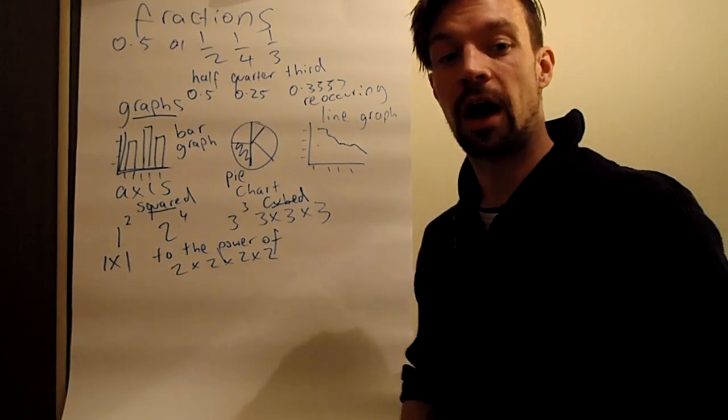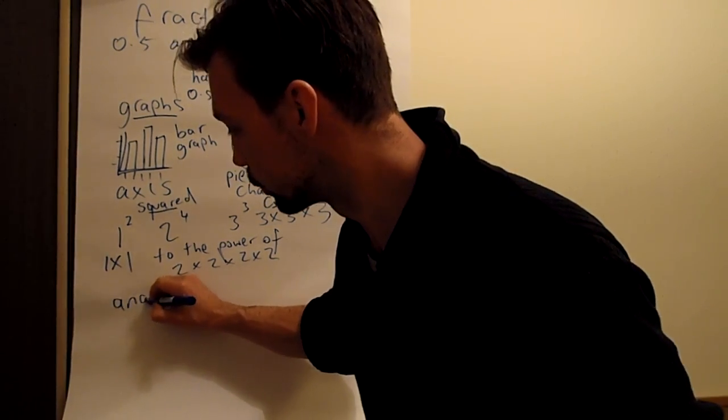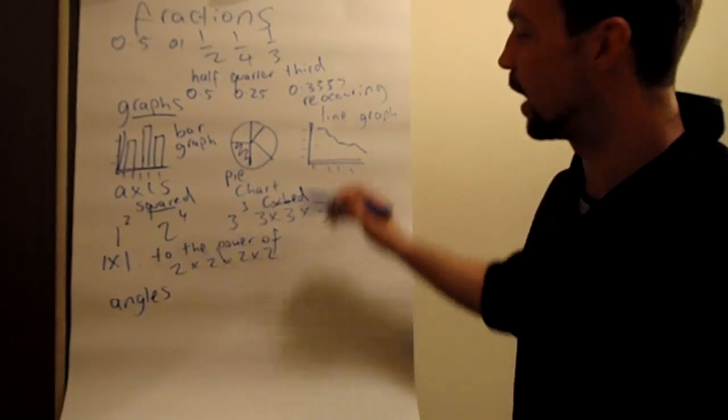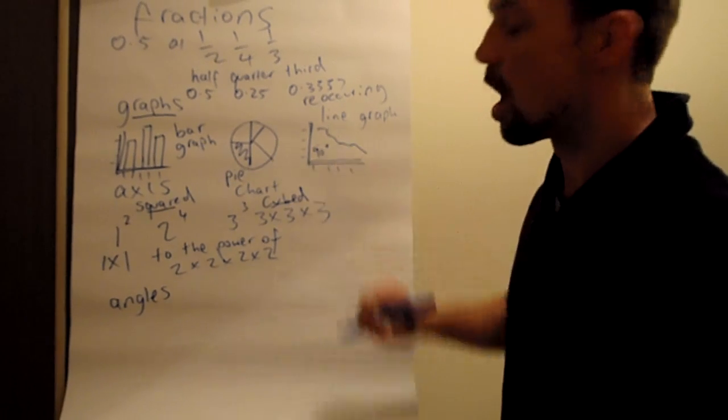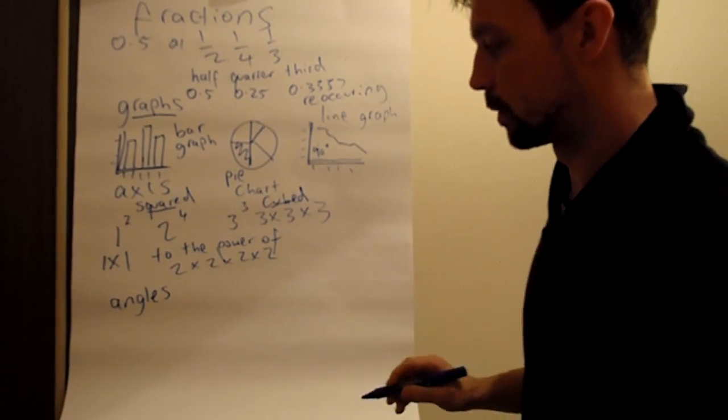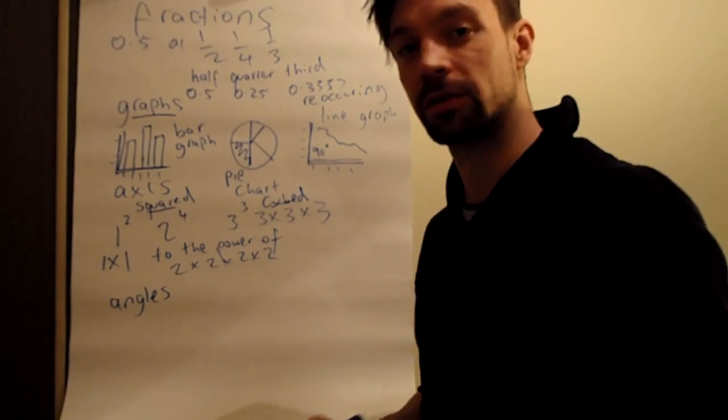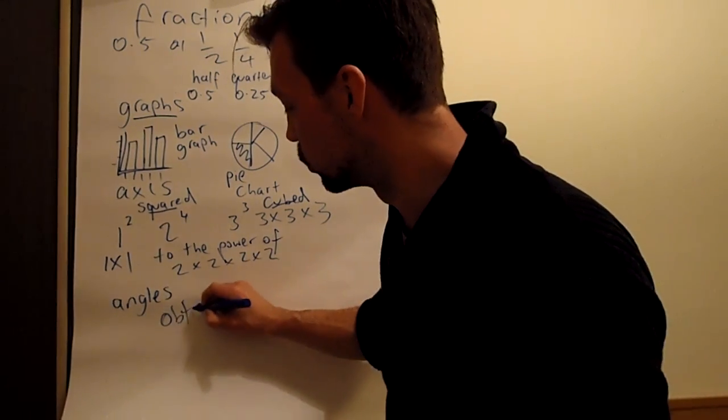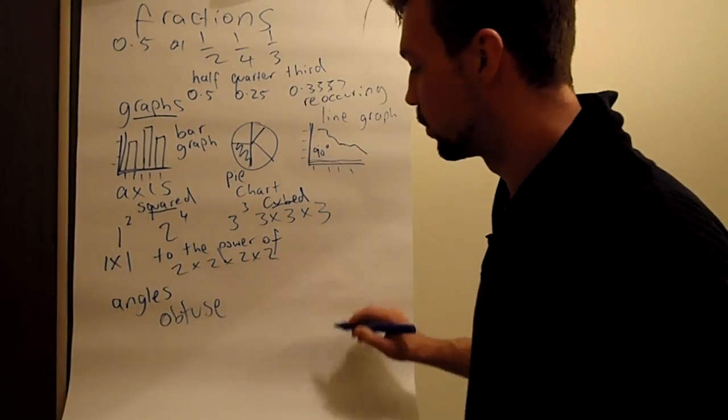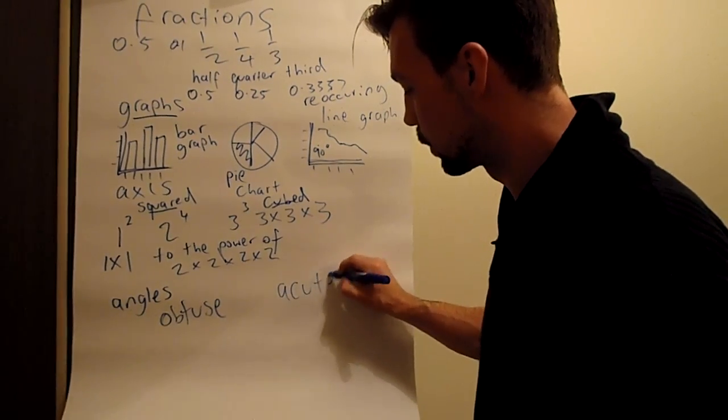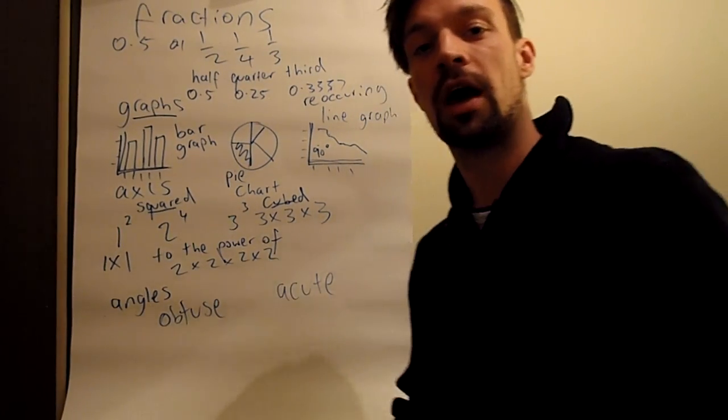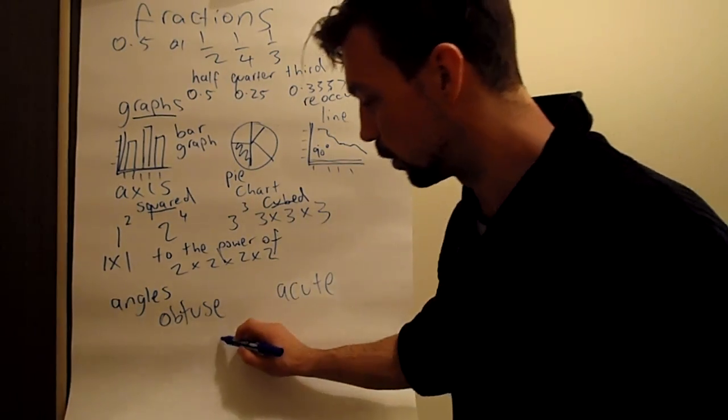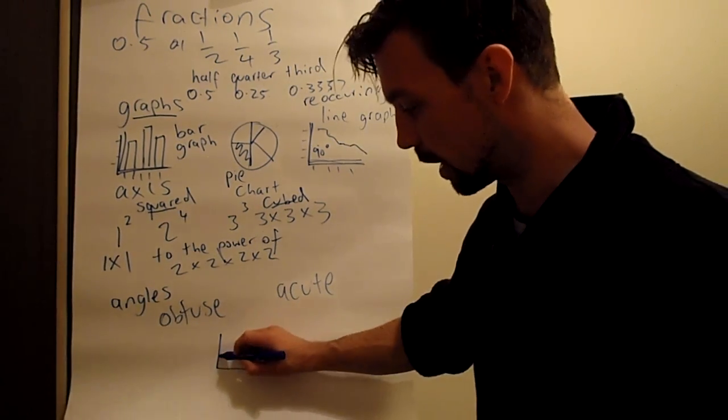Okay, the last one. We have angles. And if you look here on this line graph, there is an angle. And this angle is 90 degrees because it looks like an L. And we have two types of angles. The first one is obtuse, and the second one is acute. And the difference between these two angles is how much they go above or below 90 degrees.